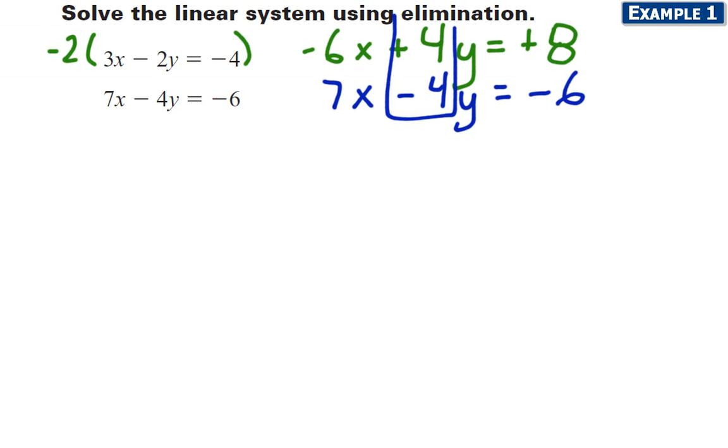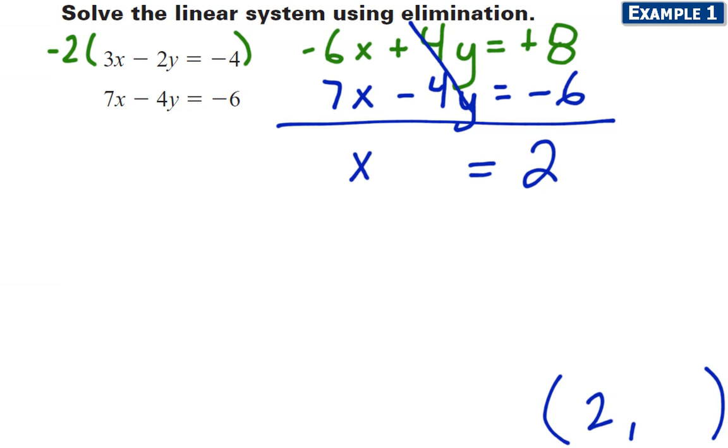And now when I add, these are going to eliminate. So I'm going to add the equations together and get 1x. That's nice that the coefficient is one. The y terms completely eliminate and the constants on the right side work out to 2. I've now actually got half of my answer, thanks to me scaling up the first equation by negative 2 or multiplying first to make those coefficients opposites for the y terms.